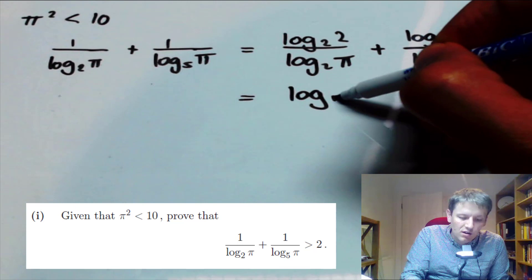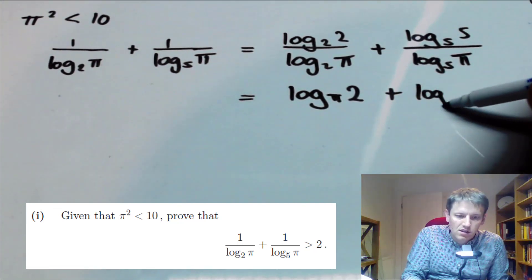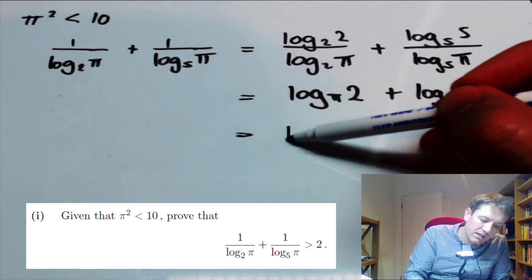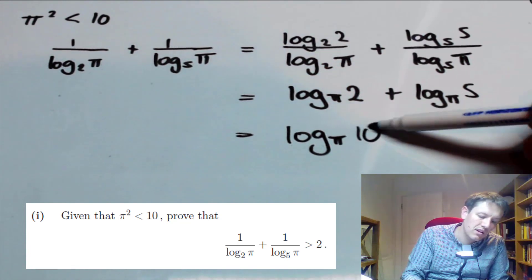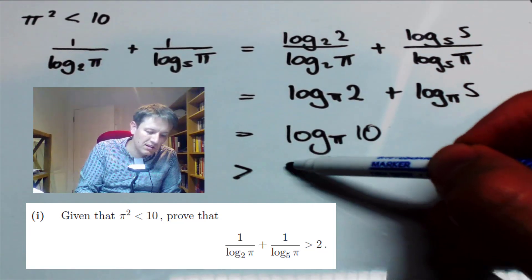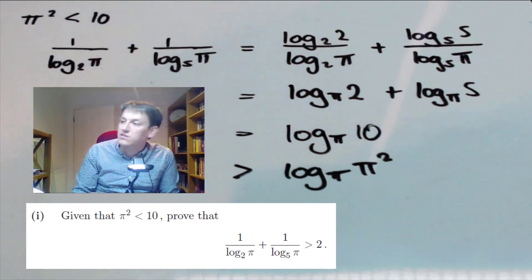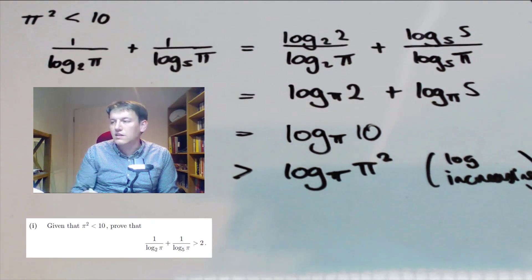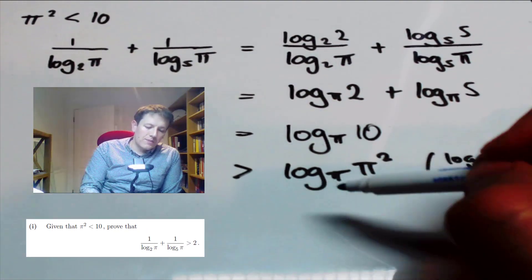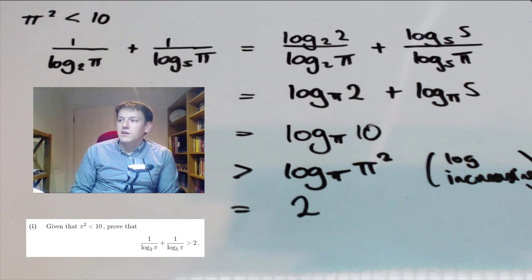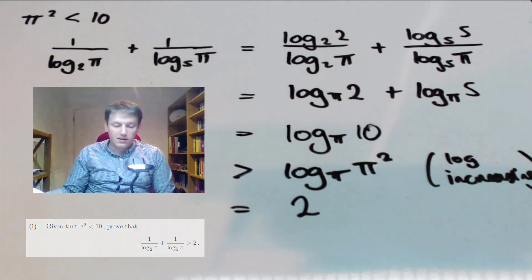Each of those expressions is an instance of the change of base formula we just proved, so I get log_π(2) and log_π(5) respectively. The rules of logarithms say that adding two logarithms gives the logarithm of the product, so this is log to the base π of 10. We're told π² is less than 10, so this must be larger than log to the base π of π², noting that log is an increasing function. And log_π(π²) is just 2.